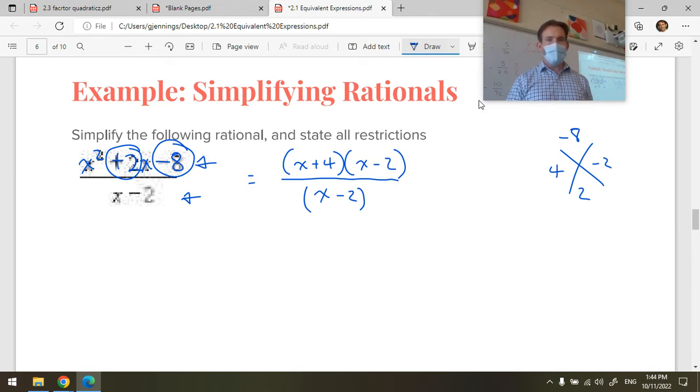So notice that we just play our x game there. We want to multiply to negative 8 and add to 2, and those numbers are positive 4 and negative 2. And then they go in there with the x terms, all over x minus 2. Now notice that this creates a situation where, just like if we had 24 divided by 7 times 12 over 14, we can cancel top and bottom. Here, x minus 2, whatever x is, is going to be the same as x minus 2. So x minus 2 divided by x minus 2 is always going to be 1 for all values of x except for one value.